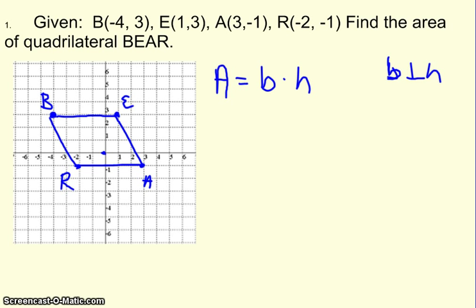I think I'm going to pick my base as R, A. I like these horizontal lines because when you're horizontal or vertical on a graph, you're allowed to just count to find the length. So from R to A, it's 1, 2, 3, 4, 5. From B to E, it's 1, 2, 3, 4, 5.